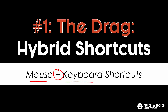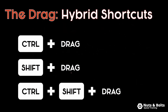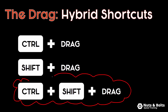The hybrid shortcut — there's a whole bunch of them, but three of the best ones are control drag and shift drag. What we're going to do here is just a control plus shift plus drag. And what this is, is a copy plus alignment of whatever objects you're working with.